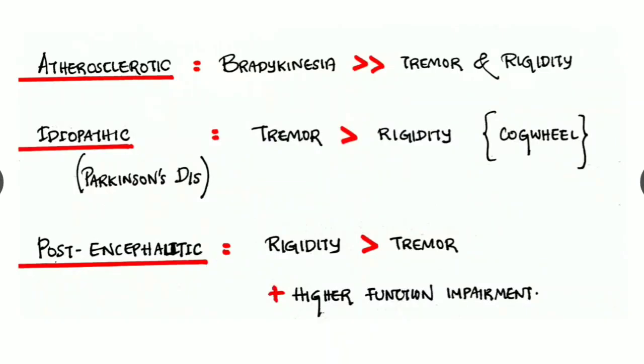We can differentiate the Parkinsonism based on its causes. In atherosclerotic type, there is bradykinesia more predominant than the tremors and the rigidity. In idiopathic type, that is Parkinson's disease, the tremor is more predominant than the rigidity, and the rigidity is of cogwheel type due to the presence of significant tremor.